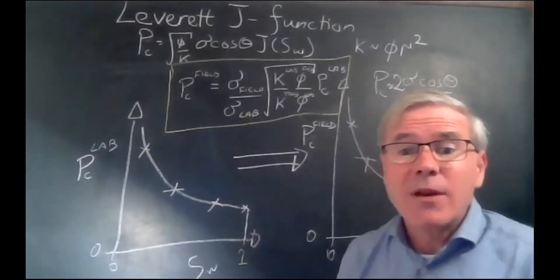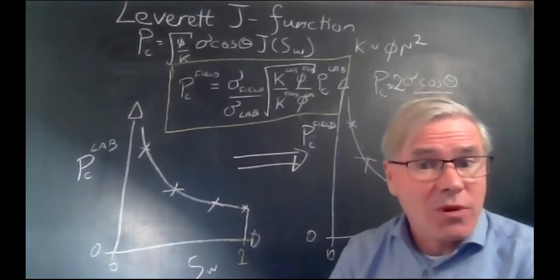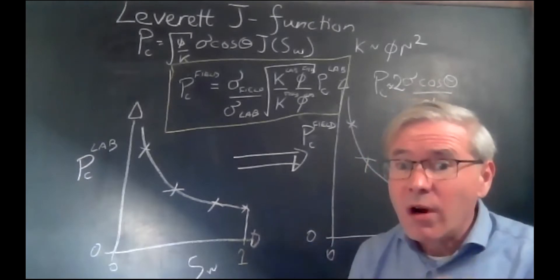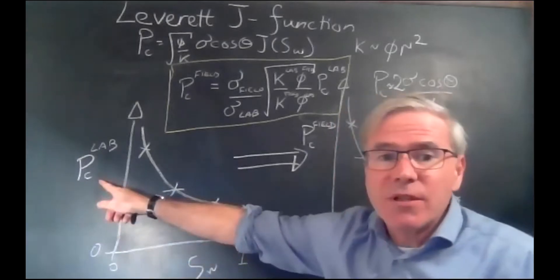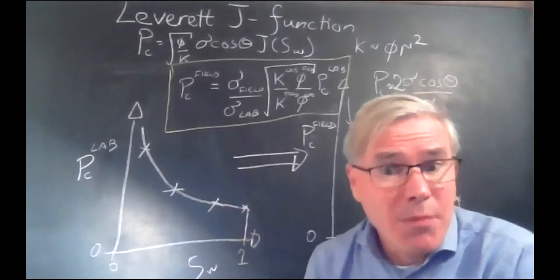Furthermore, the fluids may be different. They may be oil and water at ambient conditions as opposed to oil and water at reservoir conditions. Or, as commonly happens, the measurement of capillary pressure, certainly for primary drainage, is done using mercury.